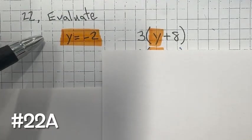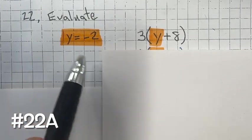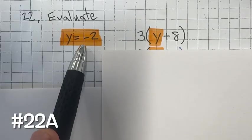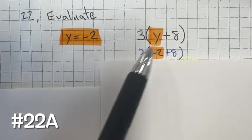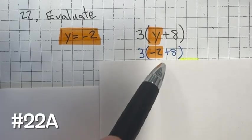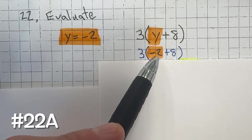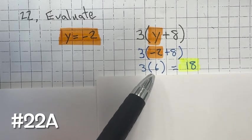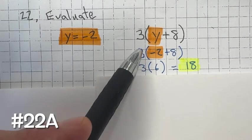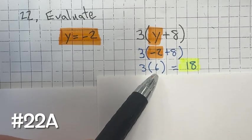For problem 22, evaluate the expression when y equals negative 2. Substitute negative 2 for y: instead of y plus 8, we have negative 2 plus 8. The signs are opposite, so subtract: 8 minus 2 is 6. Bring down the 3 still in parentheses — a number next to parentheses means multiply. So 3 times 6 equals 18.